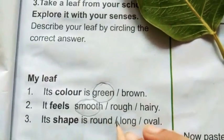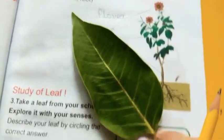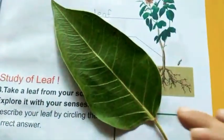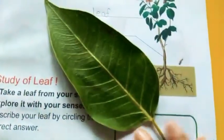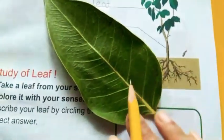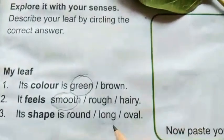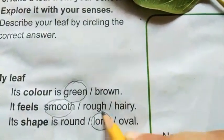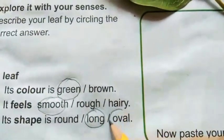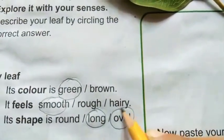Its shape is round, long, or oval. Round? No. Oval? Yes. Long as well. So its shape is oval and long — I will circle both long and oval.